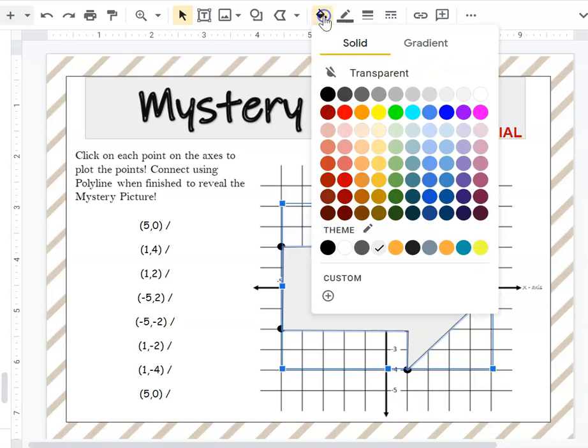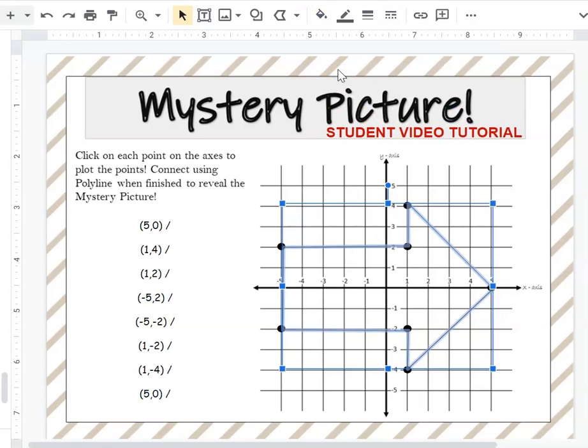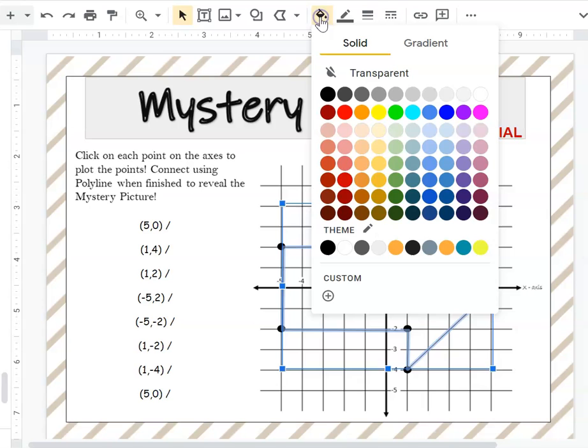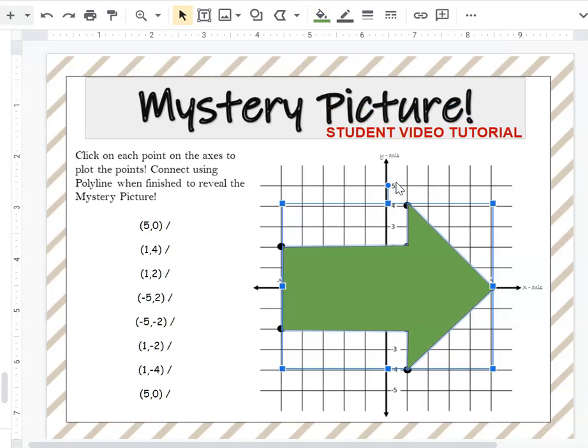You can choose your different settings by clicking on the bucket. You can make it look transparent, you can choose a different color and fill it in with that color.